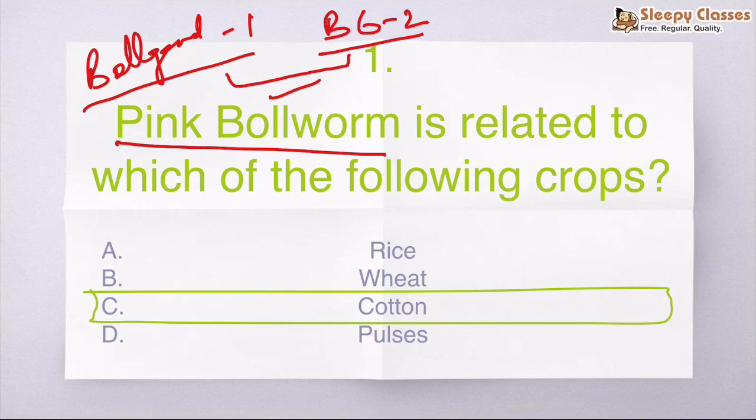So this is the first time in the world that bollworm has developed resistance to two varieties, BG1 and BG2, although other countries which produce cotton have not seen this problem in the world.